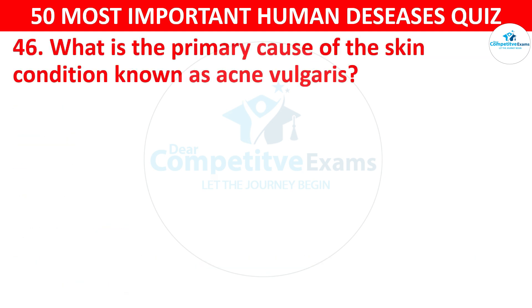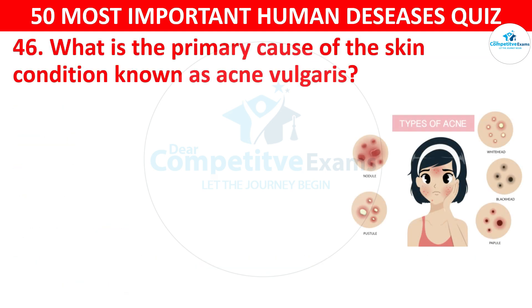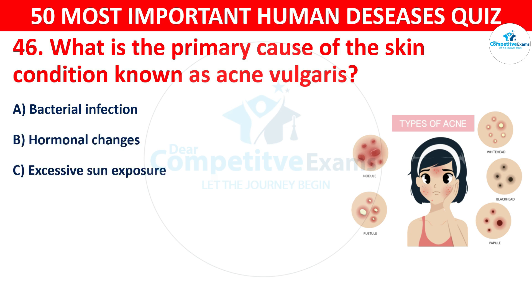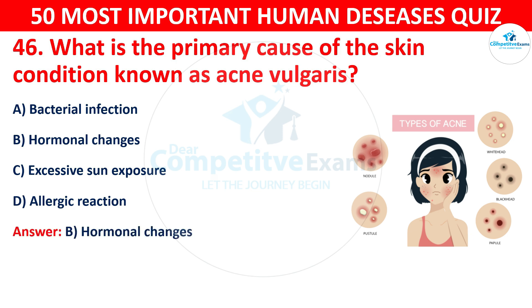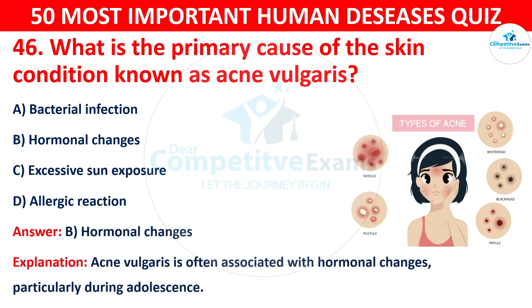Question 46: What is the primary cause of the skin condition known as acne vulgaris? Your options are: A) Bacterial infection, B) Hormonal changes, C) Excessive sun exposure, or D) Allergic reaction. The correct answer is B — hormonal changes. Acne vulgaris is often associated with hormonal changes, particularly during adolescence.